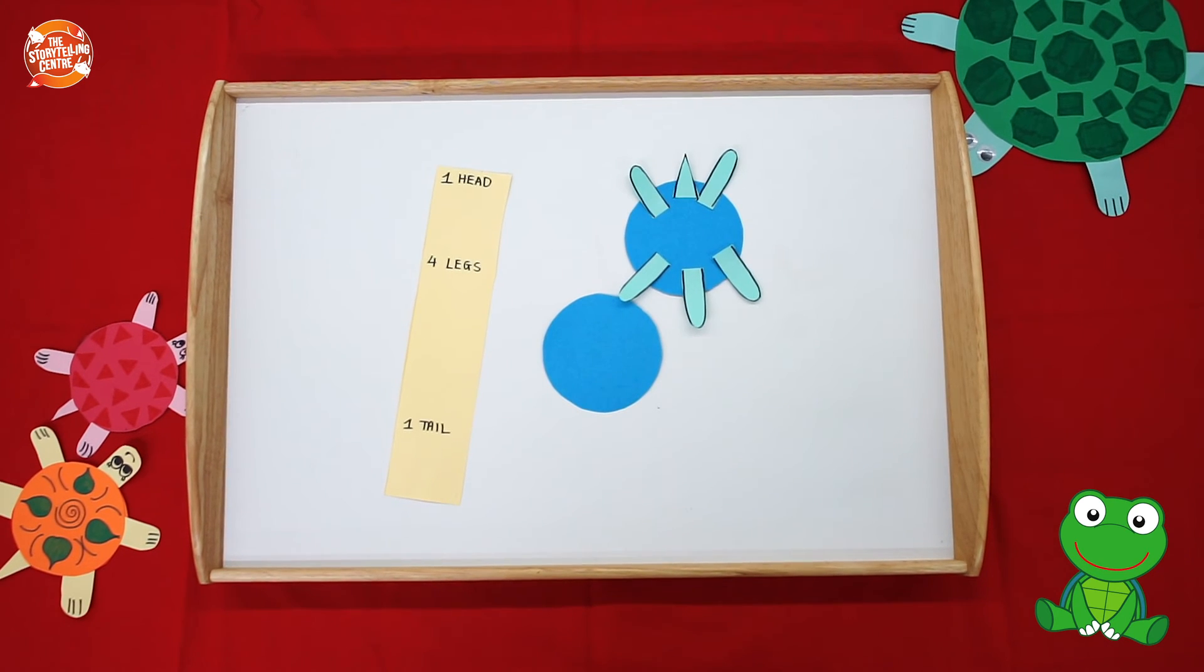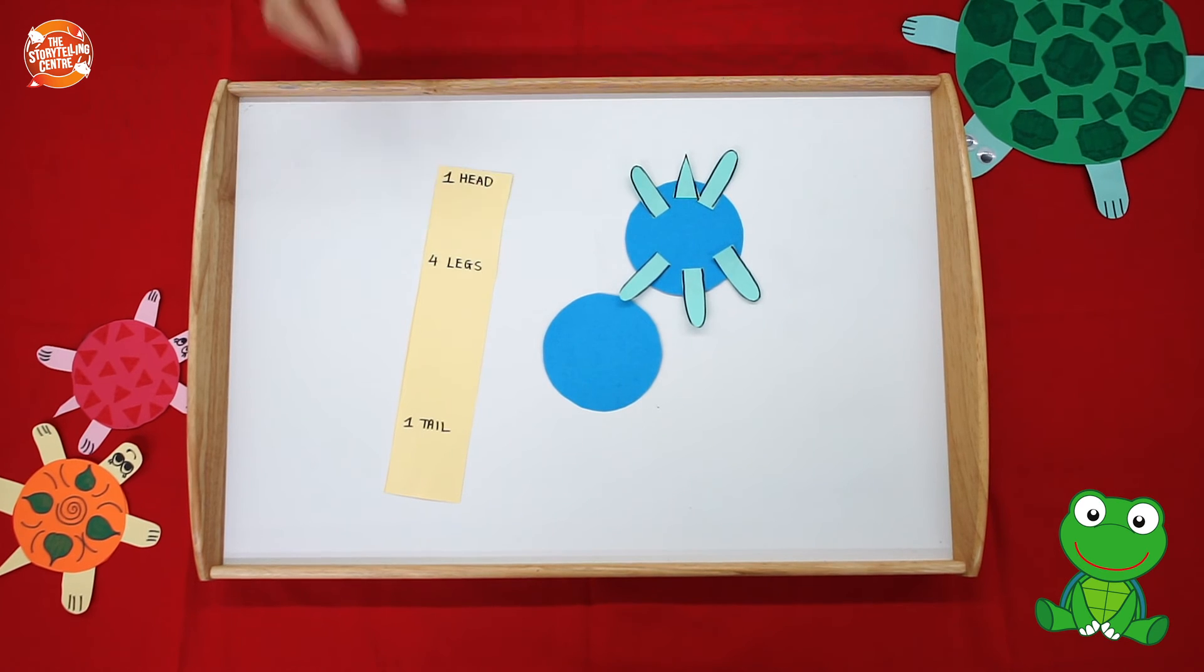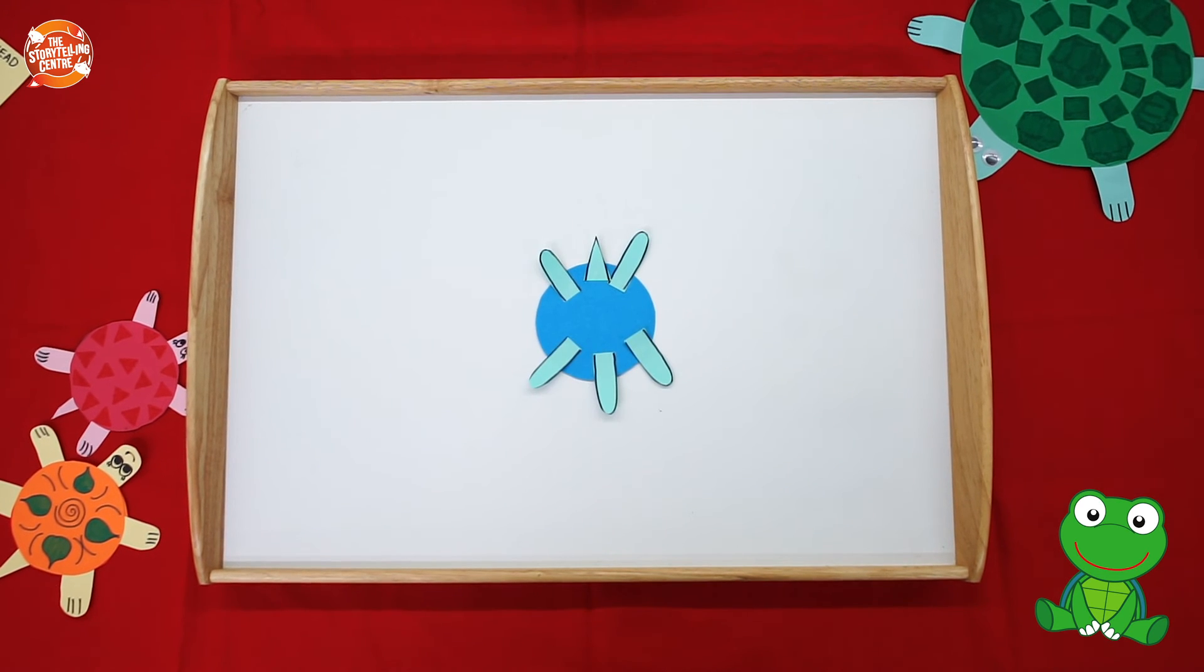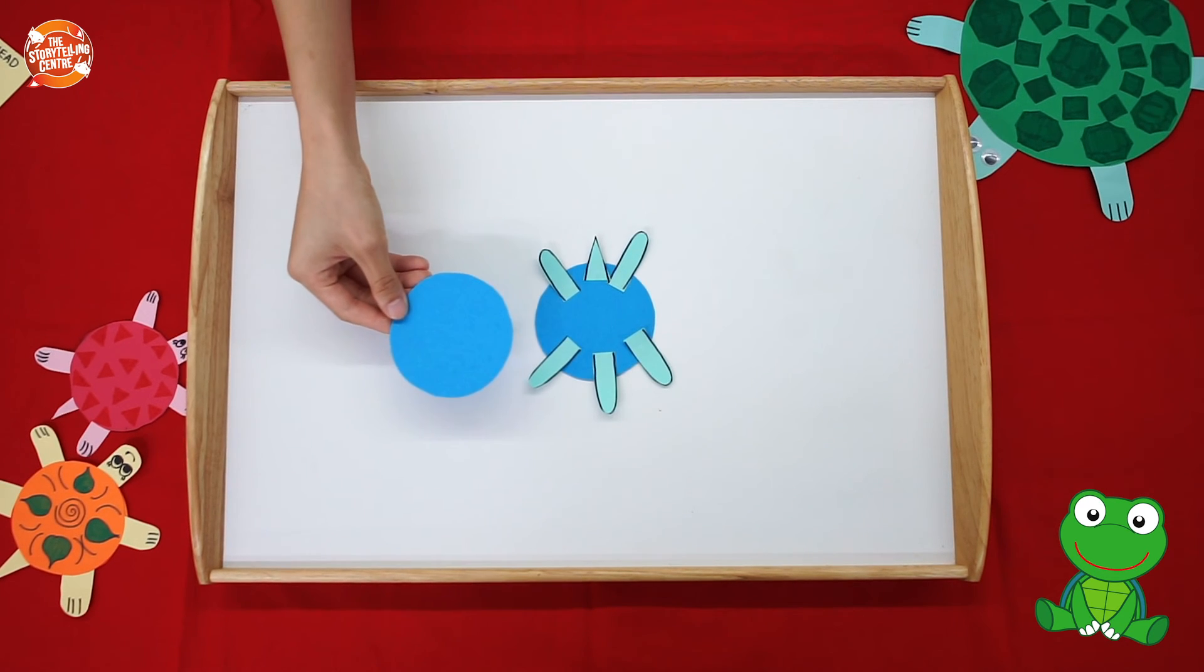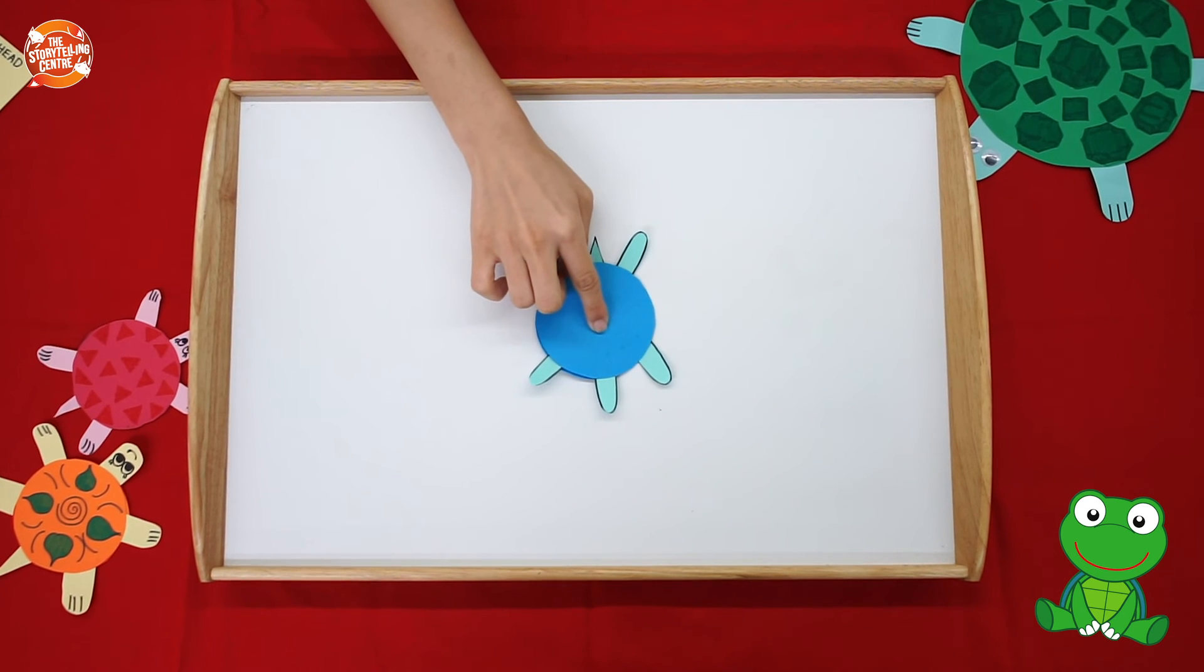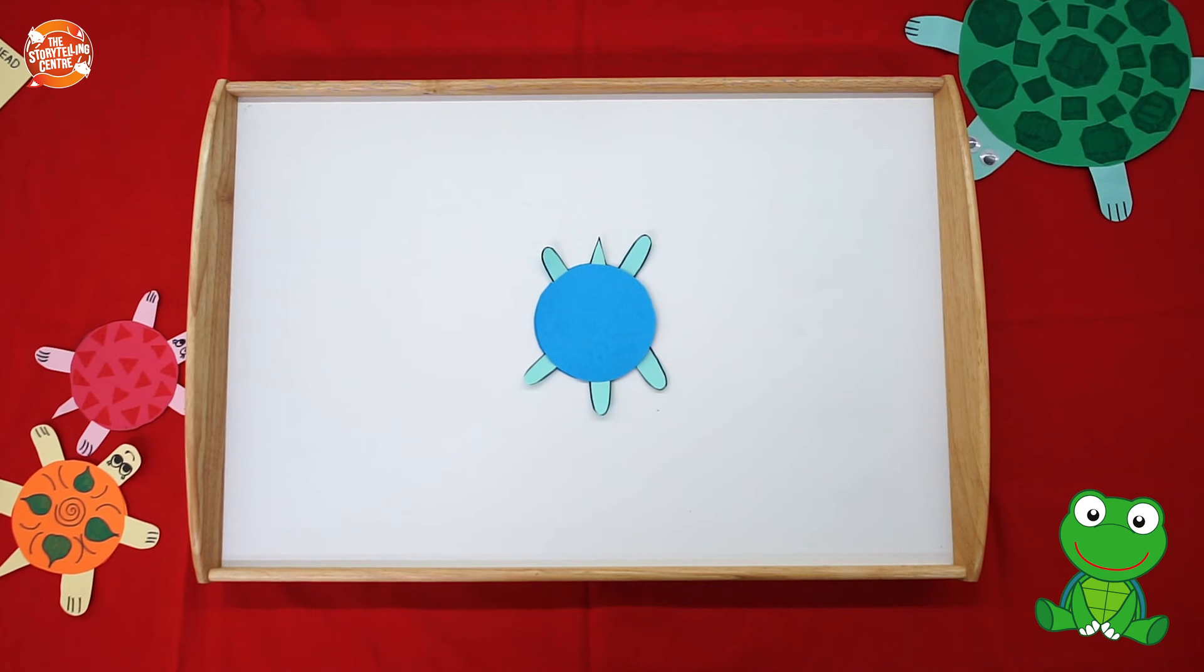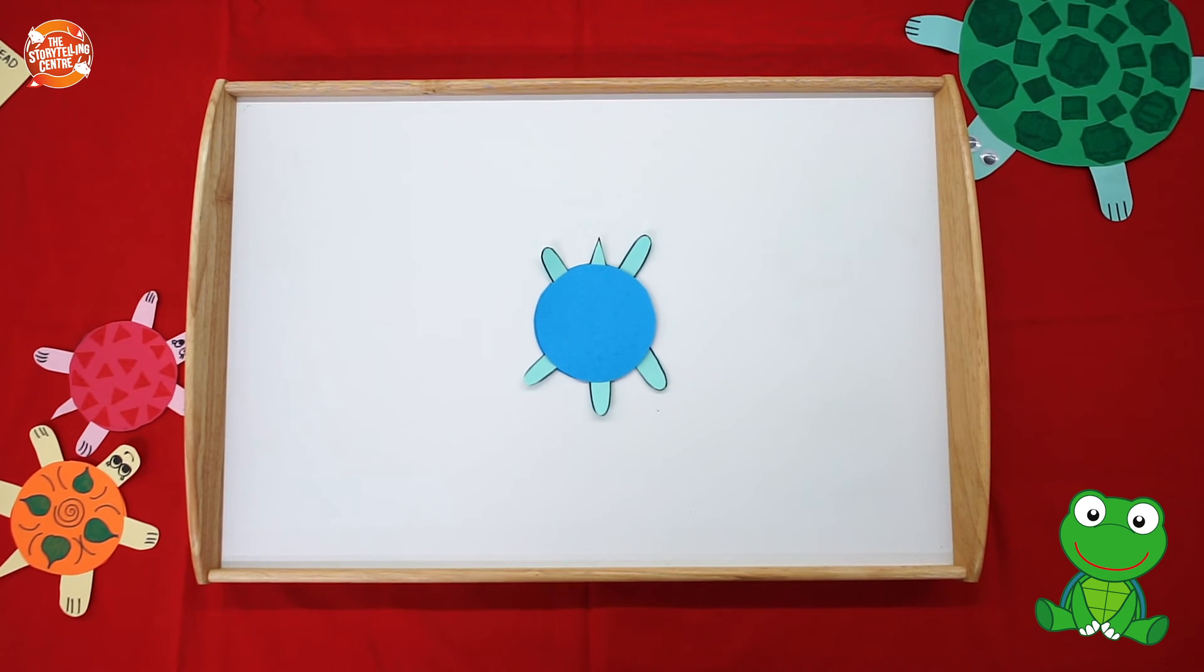Now our tortoise is starting to come together. Now we need to stick on the shell. Now let's take our other circle and paste it right on top of the tortoise. Look at that boys and girls, our tortoise is starting to come together.